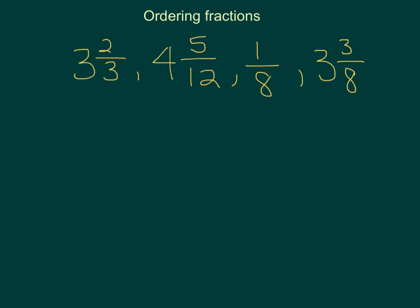You can use the same method when you are ordering fractions. The first thing you want to look at is your whole numbers. Obviously the higher the whole number, the greater the number is. So just by looking at this set of numbers, we can see we have a 3, a 4, no whole number, and another 3. So that means the 1 eighth is going to be first because it is the lowest, and our 4 and 5 twelfths would be last because it's the highest.